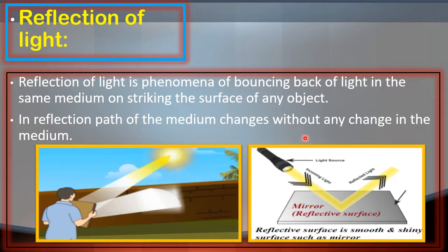यानि light की bouncing back को हम कहते हैं Reflection of Light. अब students light को Reflect Back करने के लिए कौन सी substances choose की जाती हैं? Mirrors are good reflectors क्योंकि ये maximum light को reflect back कर देते हैं. तो इसलिए आज की chapter में mostly जो reflective substances choose करेंगे वो mirrors होंगी.